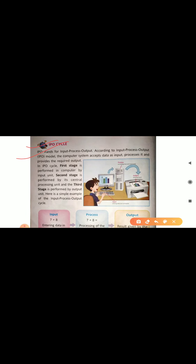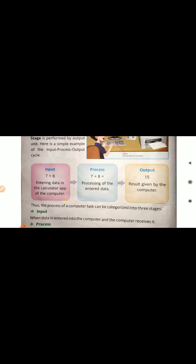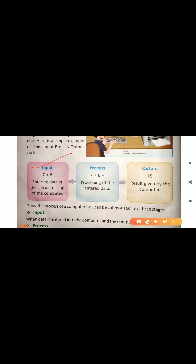The last topic is the IPO cycle. The full form of IPO is Input Process Output. In the IPO cycle, the computer accepts data as input, then processes it, and then provides the required output. For example: the input is 7 plus 8, then 7 plus 8 is processed, and the output or result given by the computer is 15. This is the work of the IPO cycle — input, process, then output.